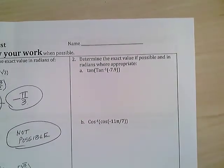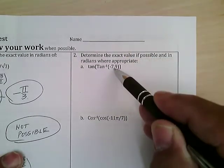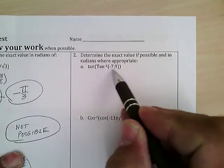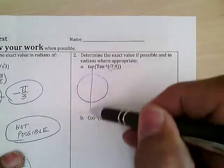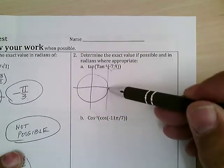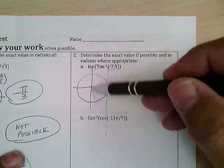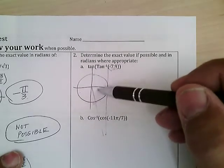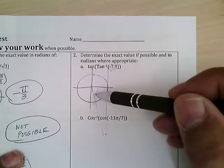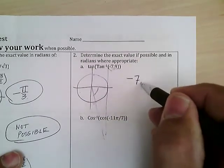Number 2: determine the exact value if possible. The tangent is negative 7π/9, so that's way down here — it's an angle in the second, first, or fourth quadrant. We use the same angle and take the tangent; it'll still be -7π/9. This says: think of this angle, then take the tangent of it — that angle will have the same tangent.